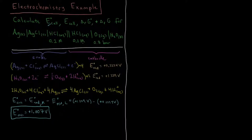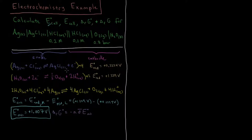Now we calculate the standard Gibbs energy from E°cell. According to the Nernst equation, ΔrG° = −NFE°cell, where N is the number of moles of electrons transferred during the reaction. In this case N = 4, because we have 4 total electrons — from 2 × 2 at the cathode and 1 × 4 at the anode.